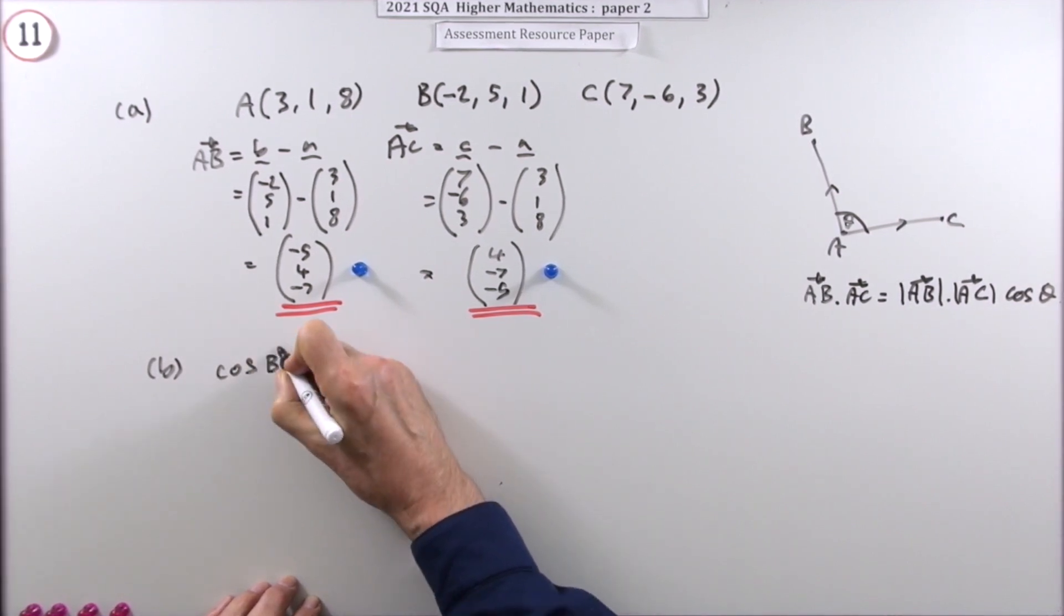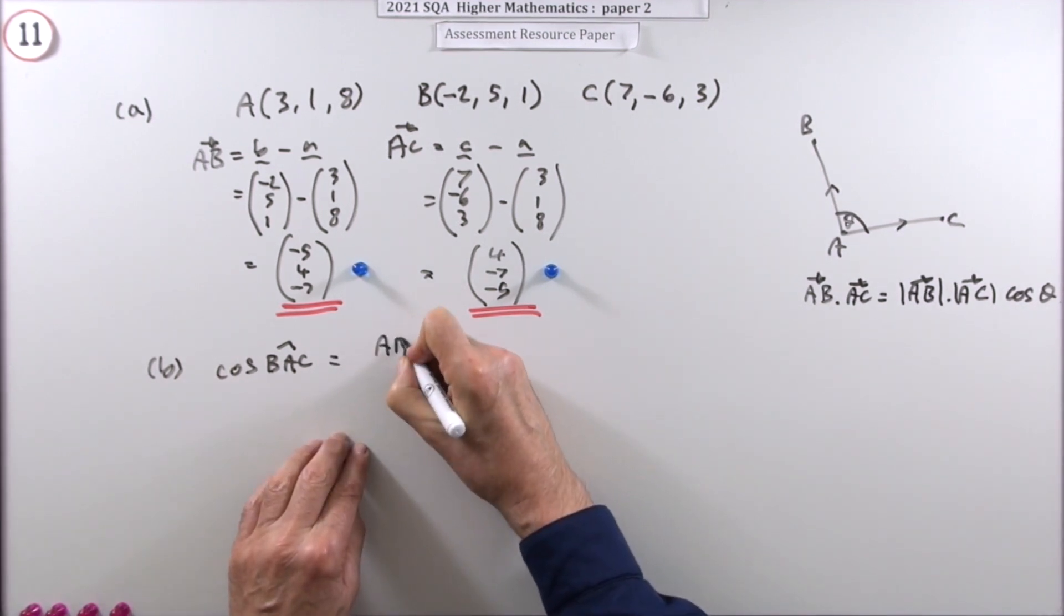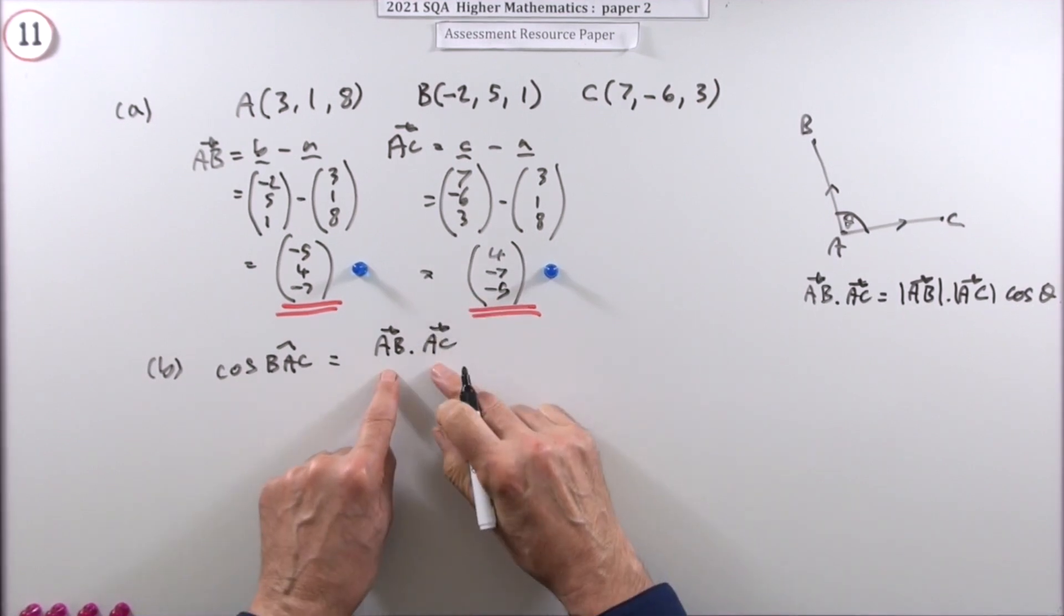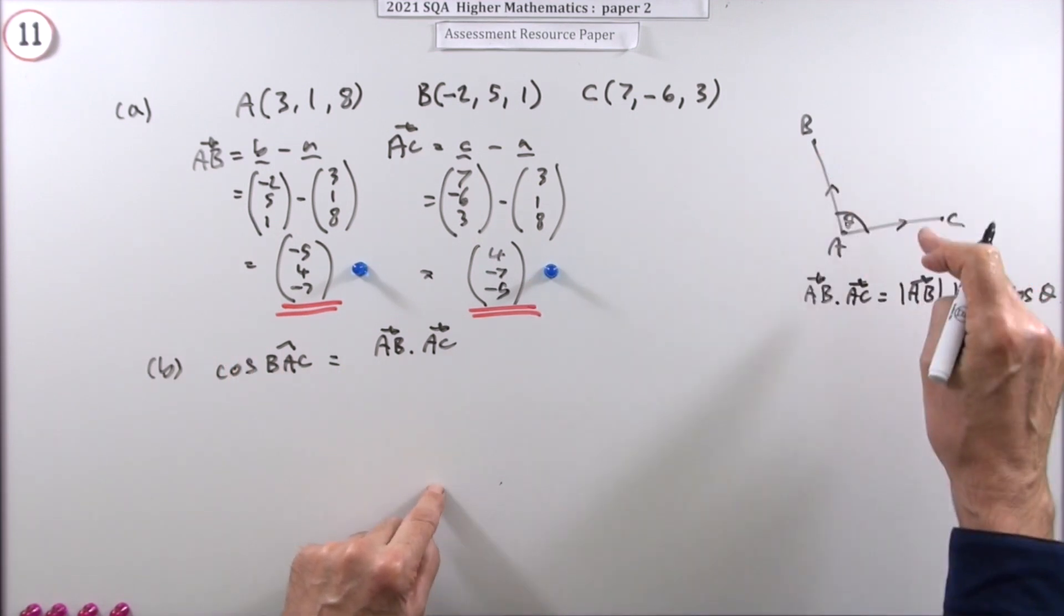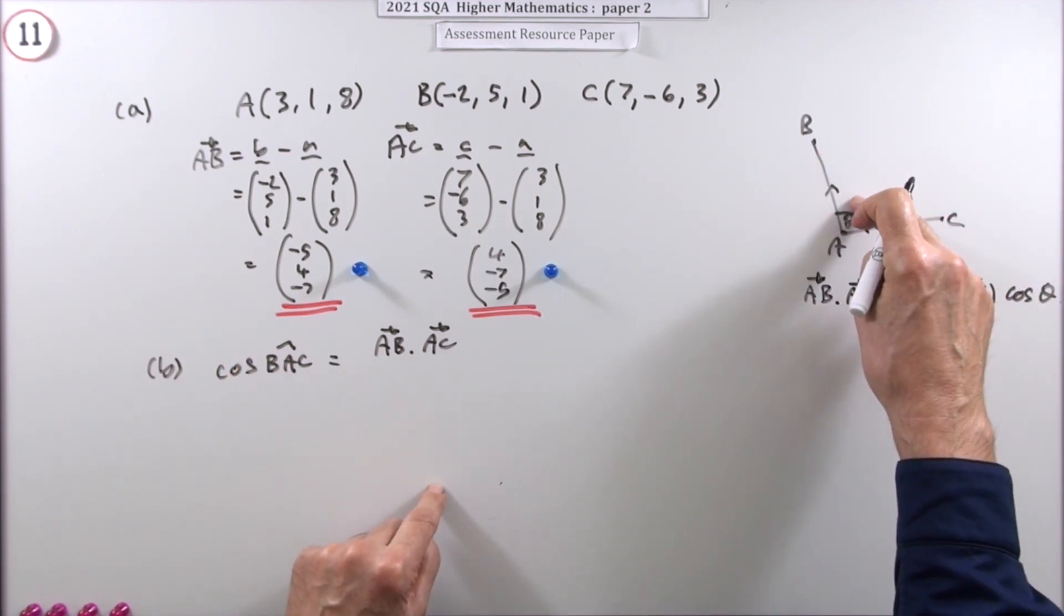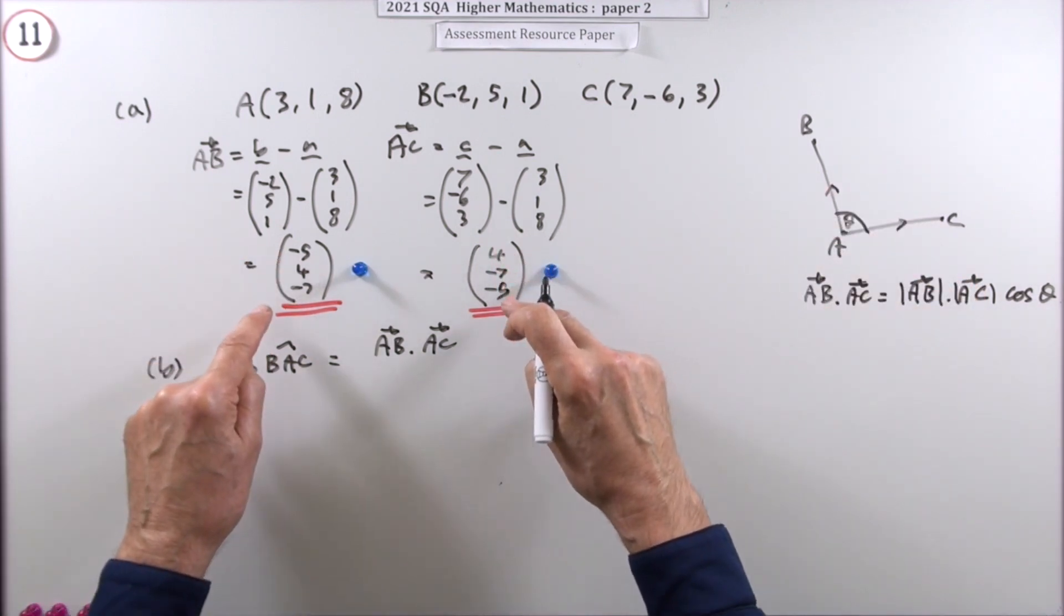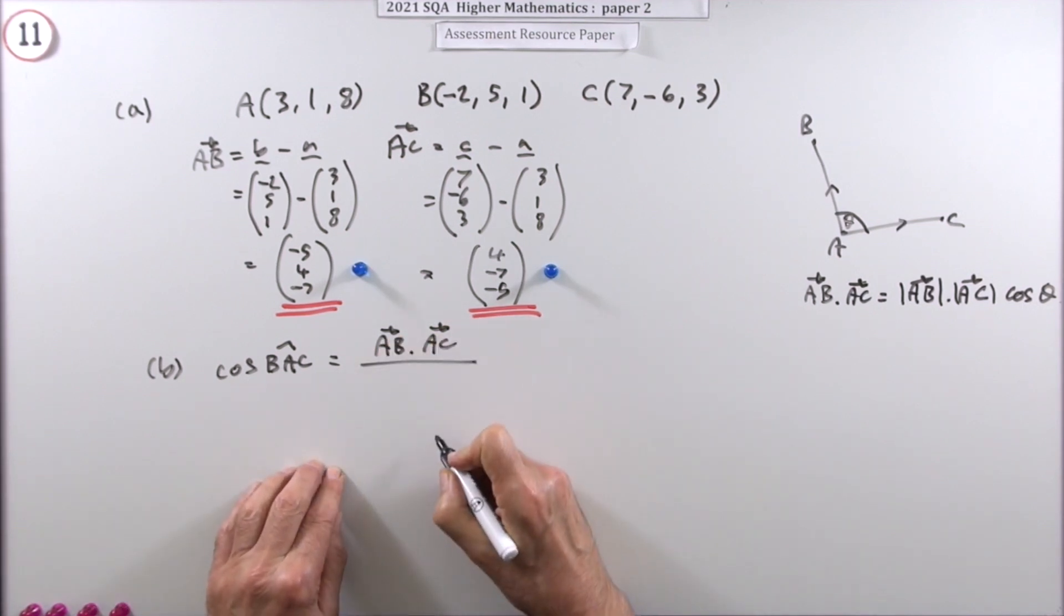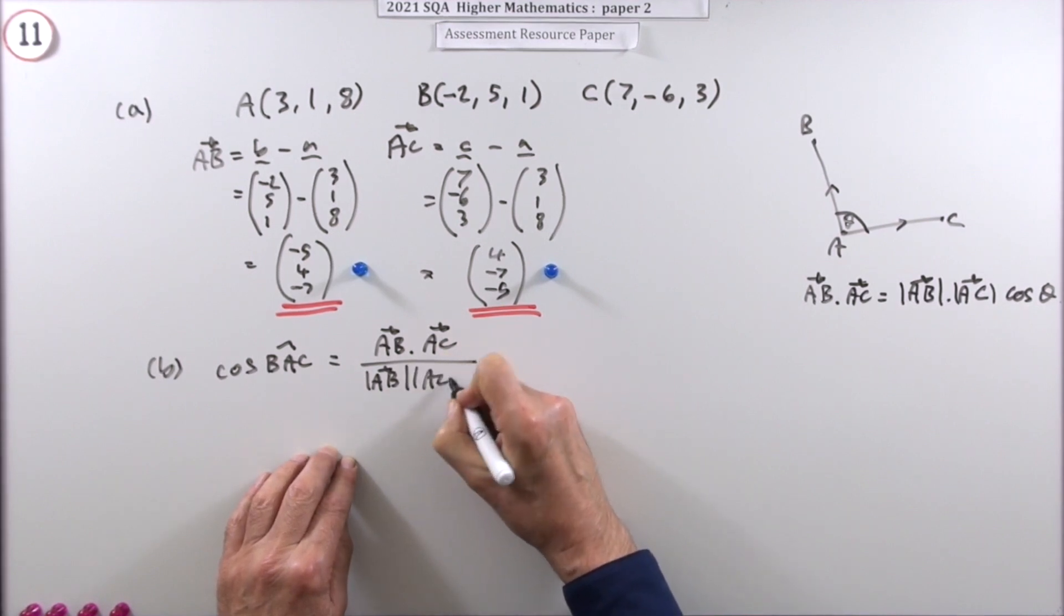The cosine of BAC, I'll put the angle as a hat on top there. It's going to be AB dot AC. That's the scalar product. There's two ways to find the scalar product. You can either do the magnitude times the magnitude times the cosine of the angle. Or you can multiply the corresponding components and add them up to get that single number. Divided by the magnitude of AB times the magnitude of AC.